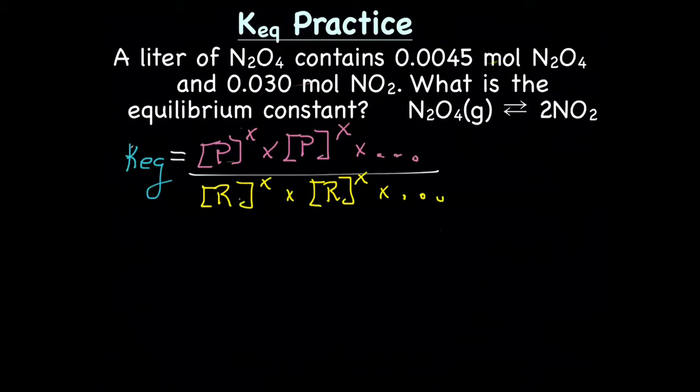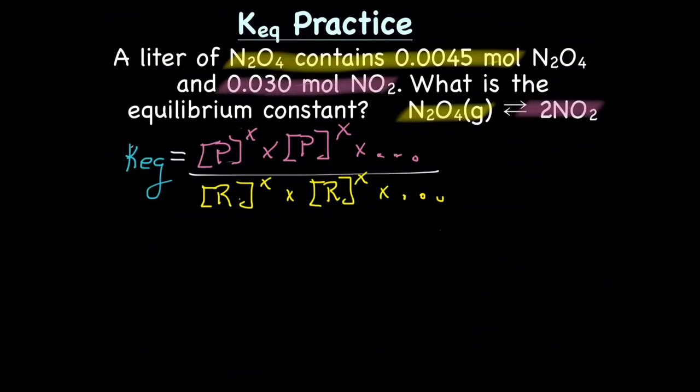Next thing we should do is go through the story, the problem, and relate that back to the actual equation. If we start with our reactant, we only have one in this case, and that would be N2O4. The story tells us that N2O4, we have 0.0045 mol, but we have a liter of this, which means it's mol per liter. Let's identify our product. We only have one, which would be NO2, and our story tells us that we have 0.030 mol NO2. Let's also identify the equilibrium constant, which is going to be our X.